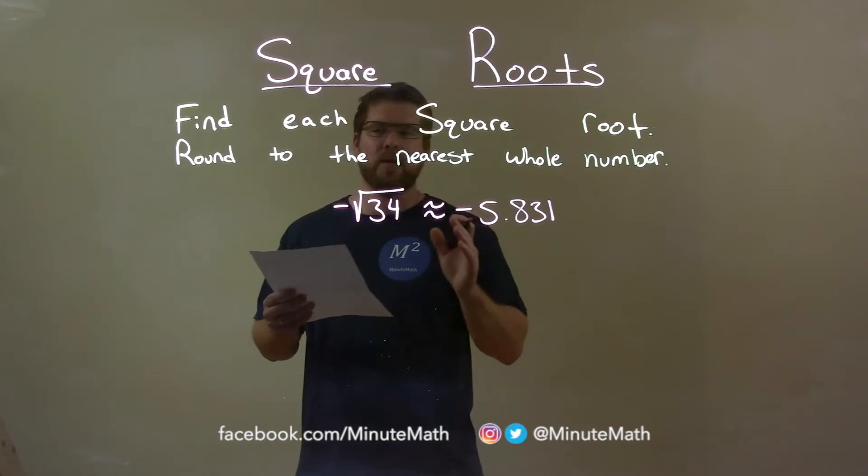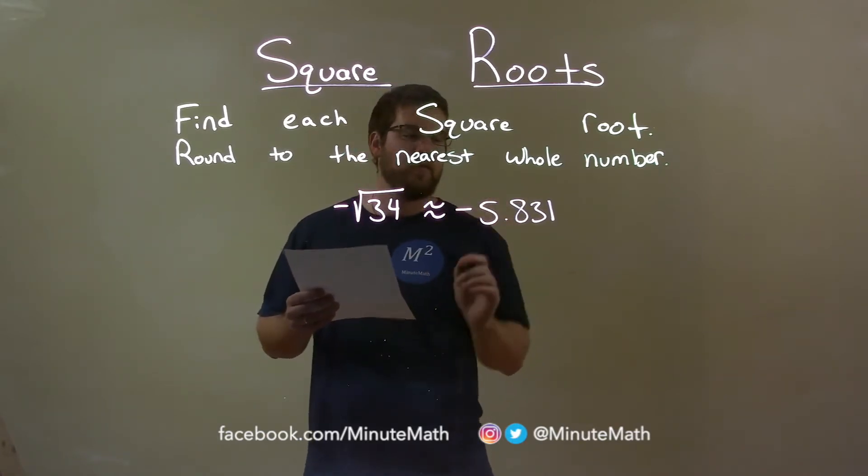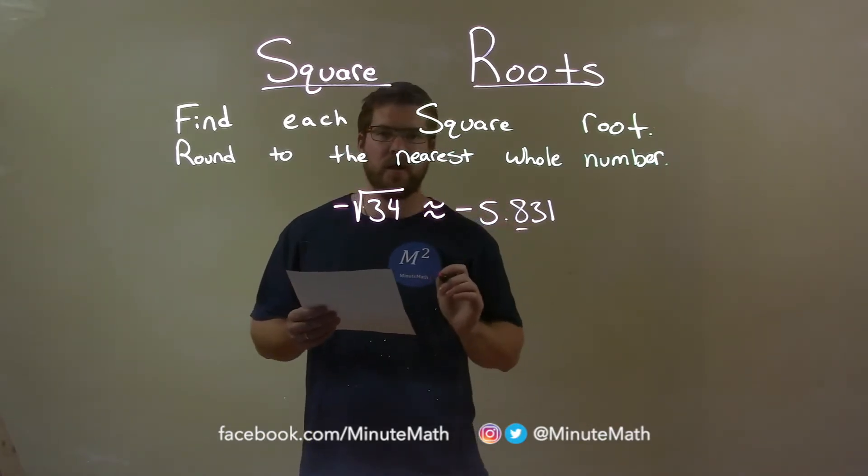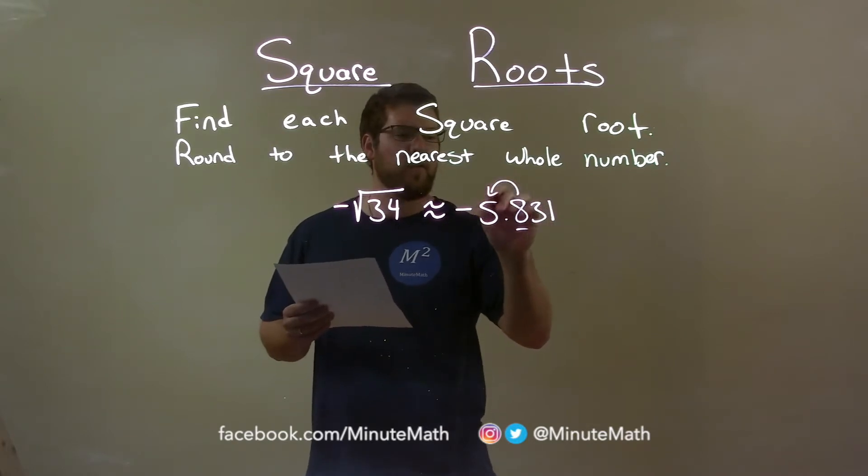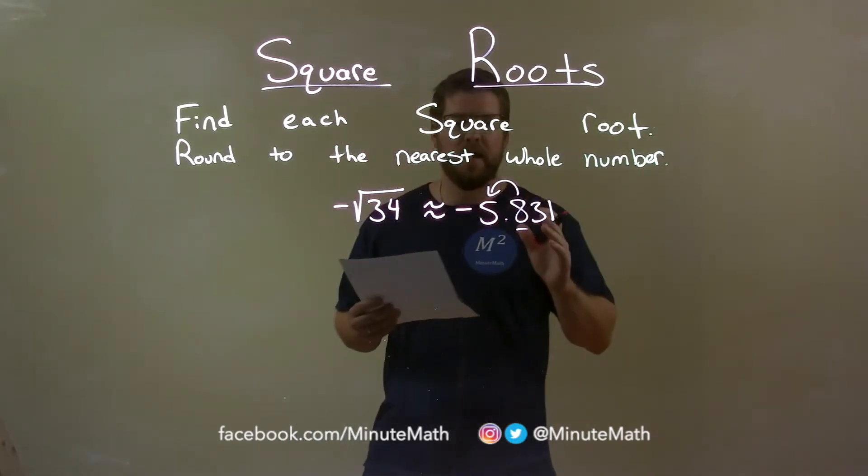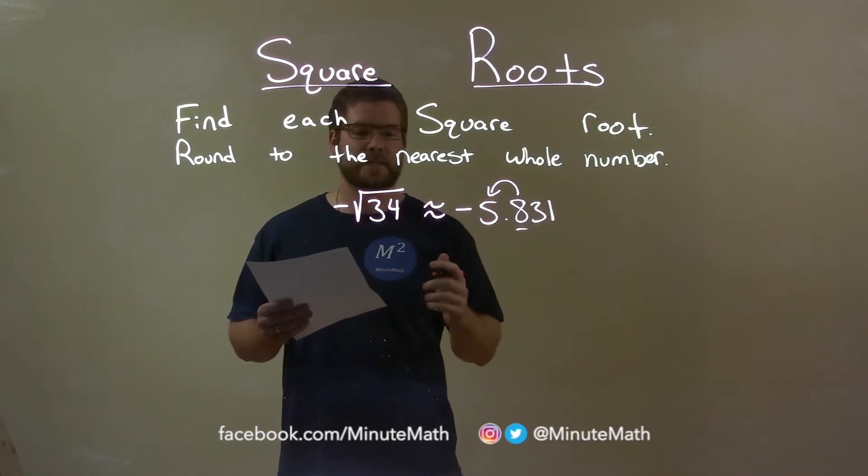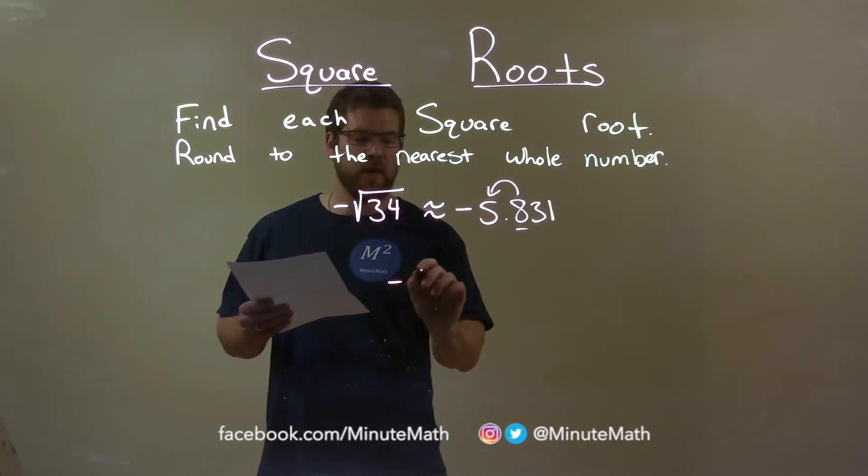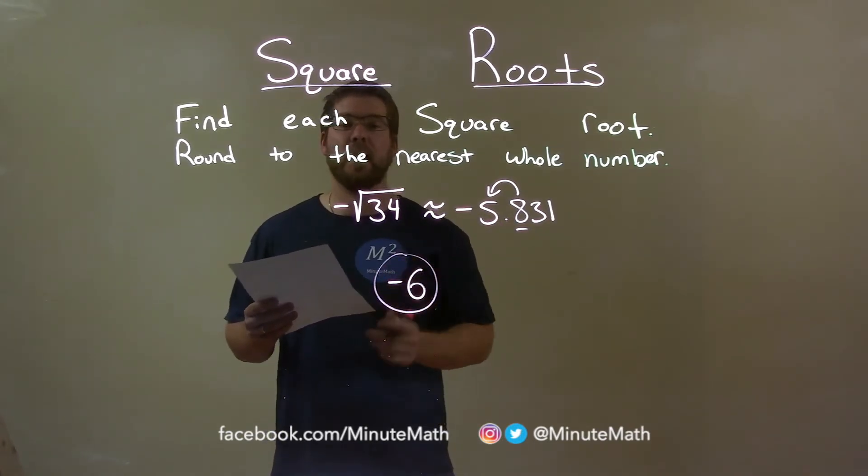They tell us though that we need to round to the nearest whole number. So we look at the tenth position right now there. That causes the whole number there to change and the 8 causes the 5 to round up to a 6. Make sure we bring the negative and our final answer here is negative 6.